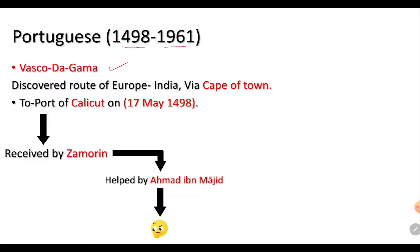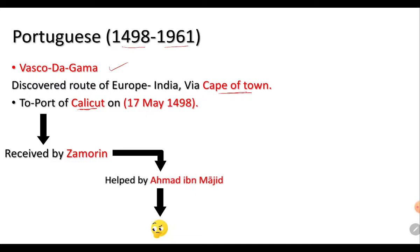Vasco da Gama discovered the route from Europe to India via the Cape of Good Hope, arriving at the port of Calicut. He came from Portugal, via the Cape of Good Hope, to the port of Calicut on 17th May 1498. He was received by the Zamorin, which is not a person but a community who lived in Calicut at that time.